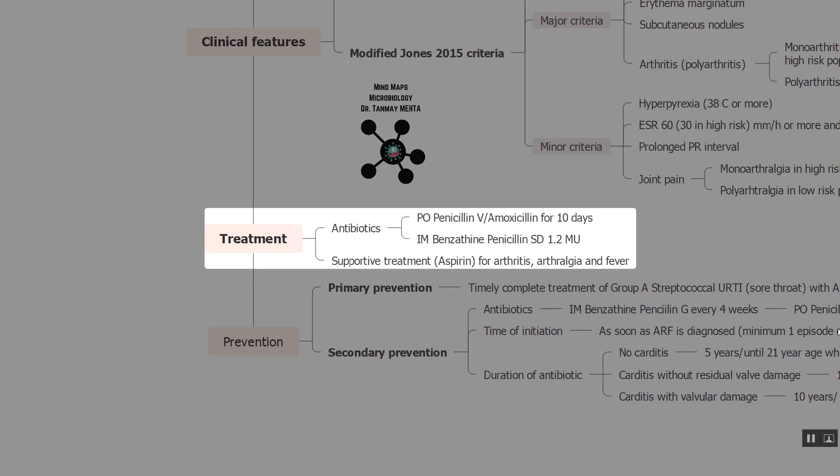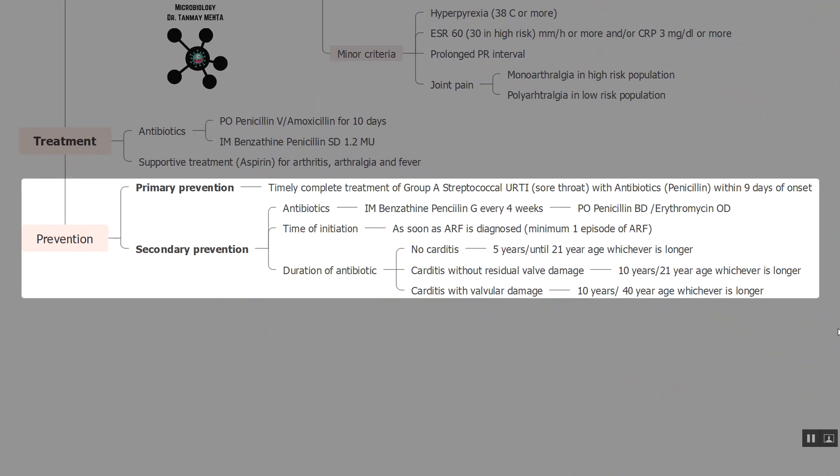For treatment, antibiotics such as penicillin or amoxicillin for 10 days are sufficient, or a single dose of 1.2 million units of intramuscular benzathine penicillin can be given. For arthritis, joint pain, and fever, supportive treatment in the form of aspirin is sufficient.